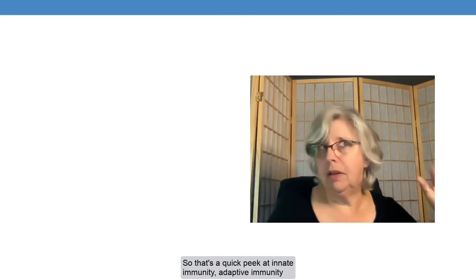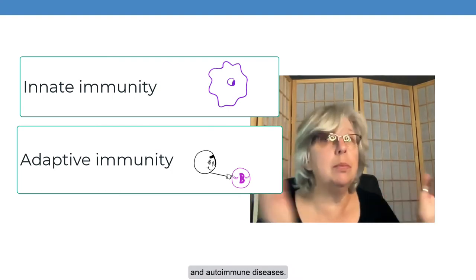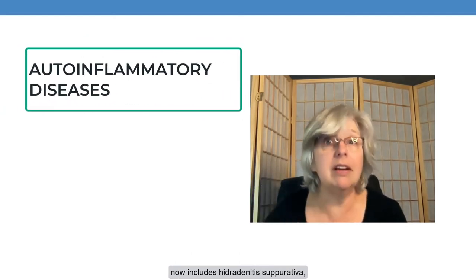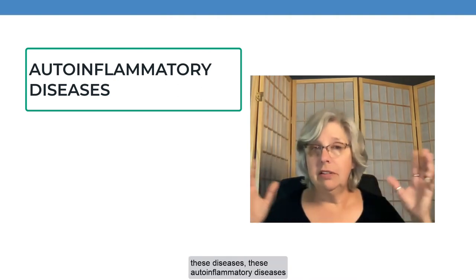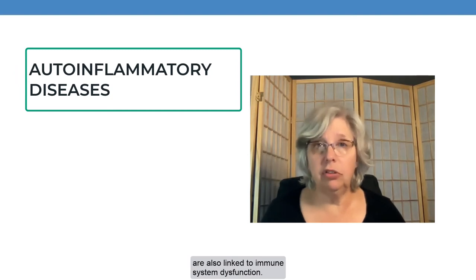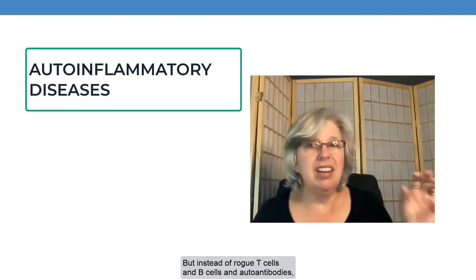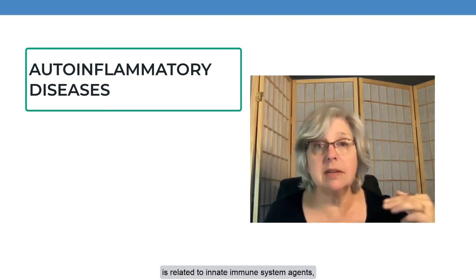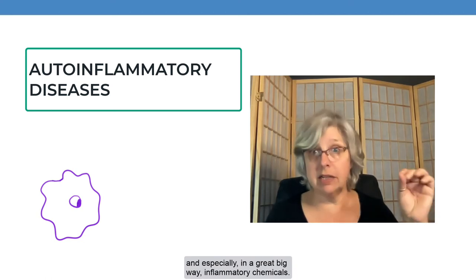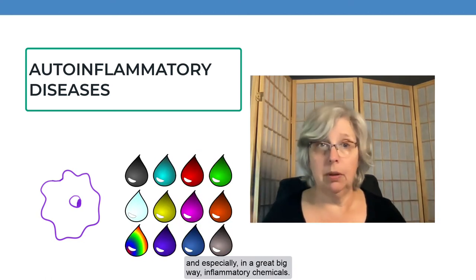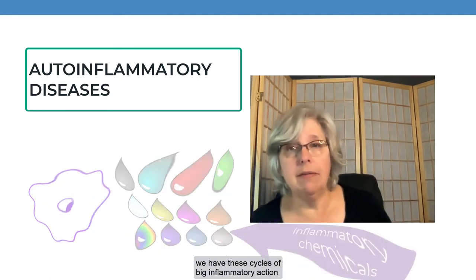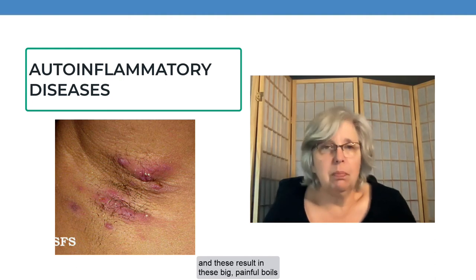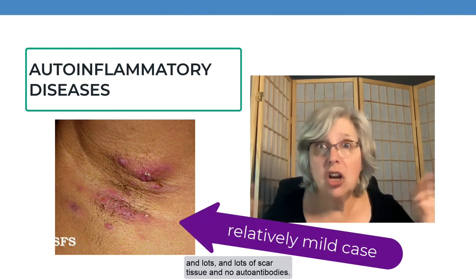So that's a quick peek at innate immunity, adaptive immunity, and autoimmune diseases. Here's this new thing: autoinflammatory diseases, which according to some specialists now includes hidradenitis suppurativa. These diseases are also linked to immune system dysfunction, but instead of rogue T-cells and B-cells and autoantibodies, the hyperactivity in these situations is related to innate immune system agents — nonspecific white blood cells — and especially, in a great big way, inflammatory chemicals. And that does seem to be the case with HS. We have these cycles of big inflammatory action at the apocrine sweat glands of some people, resulting in big, painful boils, lots and lots of scar tissue, and no autoantibodies.